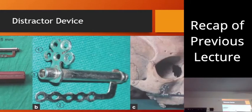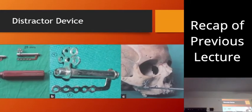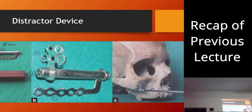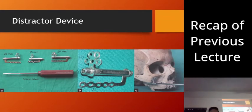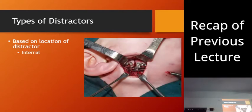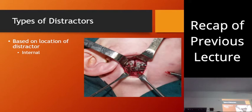Here it is for maxillary osteotomy and distraction. This goes over the zygomatic bone and this plate goes over the maxillary bone. We give the cut at the LeFort I osteotomy level and then we pull it forward. These are all the different distractor devices. Distractor devices can be classified as internal or external, based on where the movement occurs.